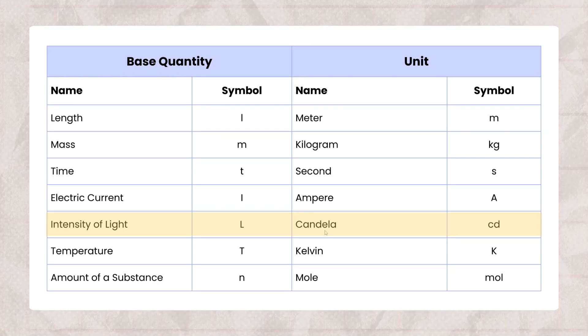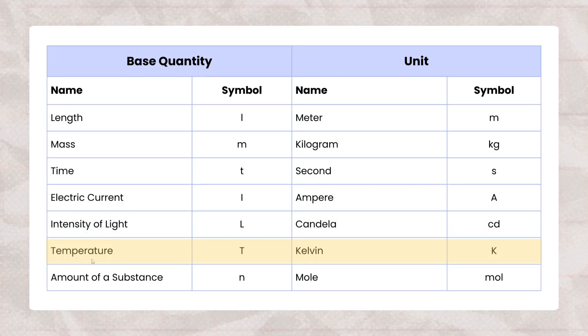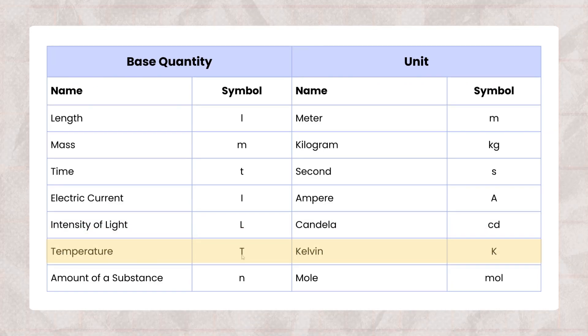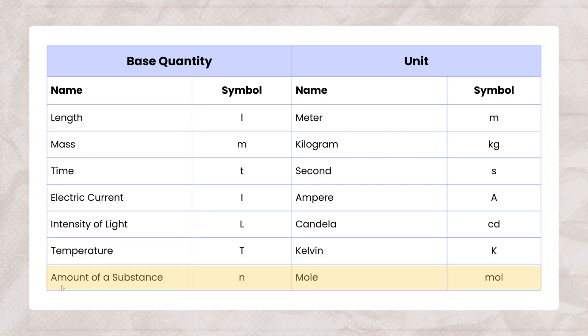Its unit is candela and it is represented by cd. Number 6 is temperature. Its symbol is capital T. Its unit is Kelvin and it is denoted by capital K. Last and 7 is amount of a substance.